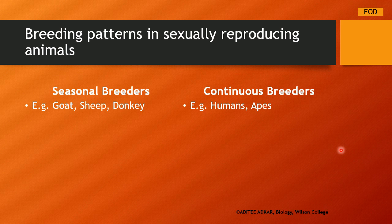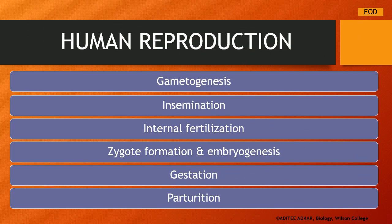Let us now discuss the process of human reproduction. There are certain steps involved. The first step is gametogenesis — 'gametes' referring to male and female gametes, and 'genesis' meaning formation — so gametogenesis is the process of formation of male and female gametes. After the gametes are formed, the next step is insemination, meaning the male gametes will enter into the body of the female and are delivered into the female reproductive tract.